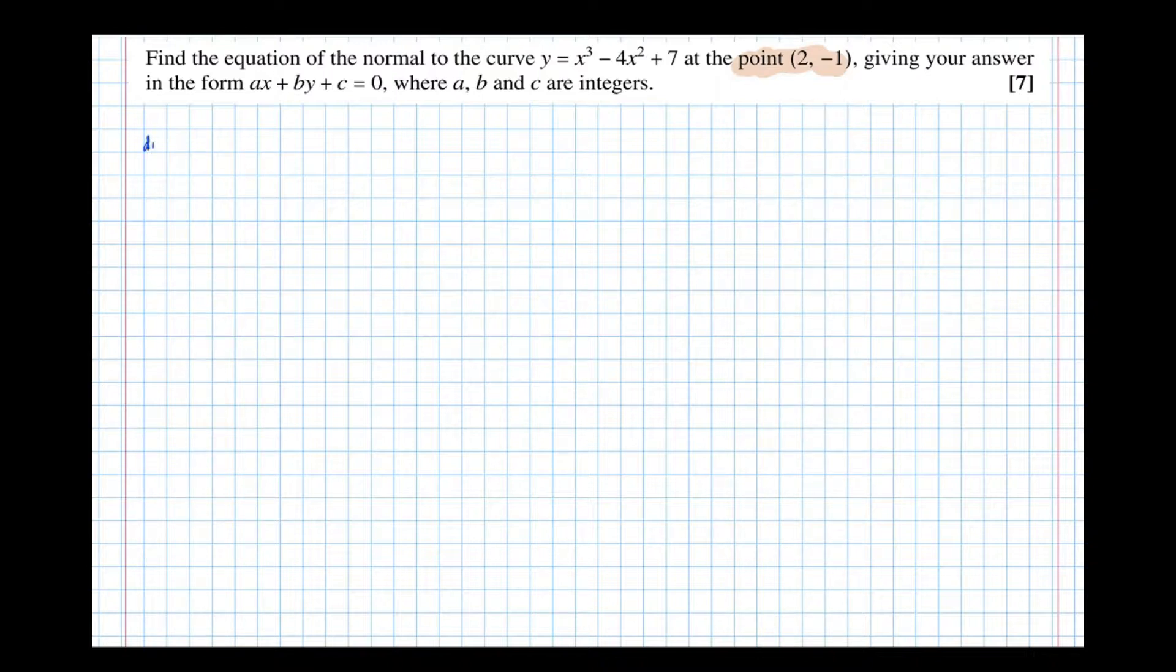So dy/dx, to find the gradient of a curve, equals 3x² - 8x, then the +7 differentiates to 0.